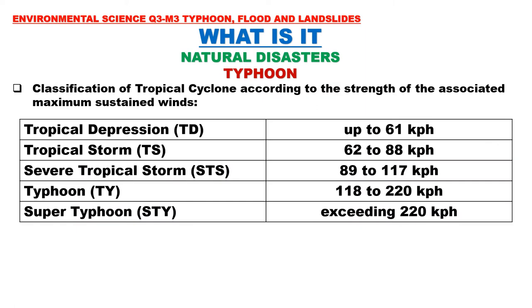Here is the classification of tropical cyclones according to the strength of the associated maximum sustained winds: tropical depression — up to 61 km per hour; tropical storm — 62 to 88 km per hour; severe tropical storm — 89 to 117 km per hour; typhoon — 118 to 220 km per hour; and super typhoon — exceeding 220 km per hour.